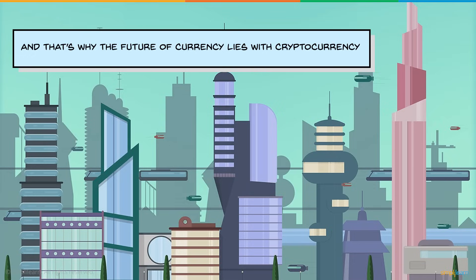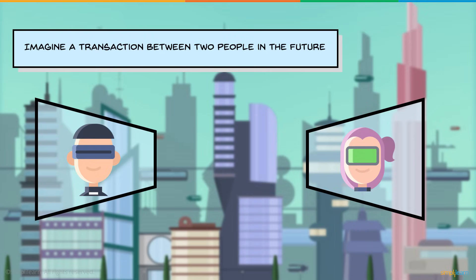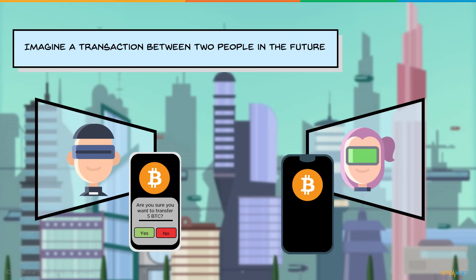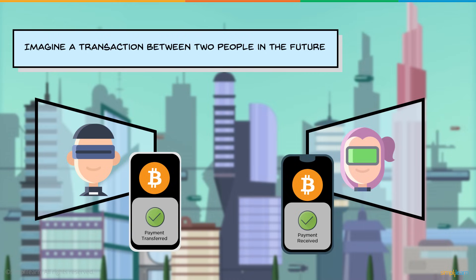This is why the future of currency lies with cryptocurrency. Imagine a future transaction: one person has the Bitcoin app, gets a notification asking whether they're ready to transfer five bitcoins, confirms, and processing takes place — authenticating the user's identity, checking the required balance, and transferring the payment. All of this happens in a matter of minutes. This removes all the problems of modern banking: no limits on funds, accounts cannot be hacked, and there's no central point of failure.